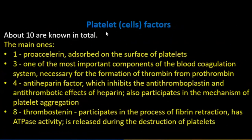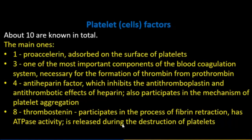Platelet cell factors number about 10. The main ones include: factor 1 (proaccelerin), absorbed on the surface of platelets; one of the most important components of the blood coagulation system is factor 3; factor 4 is an anti-heparin factor which inhibits anti-thromboplastin and anti-thrombotic effects of heparin; and factor 8 (thrombosthenin), which participates in the fibrin reaction process and has antiphase activity, and is released during destruction of platelets.